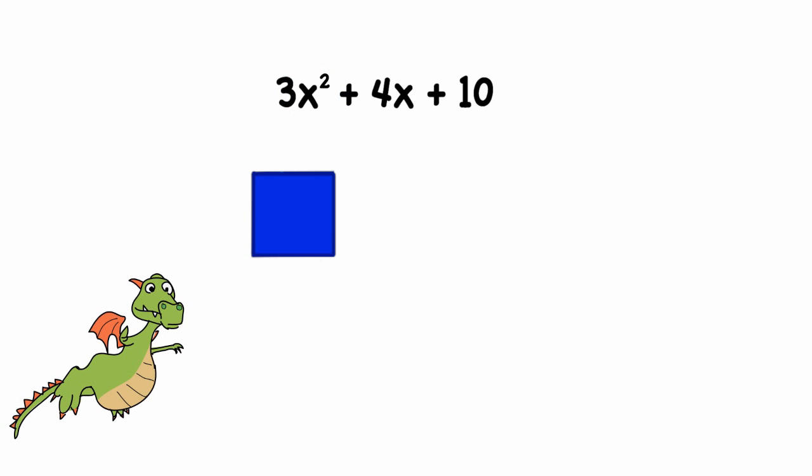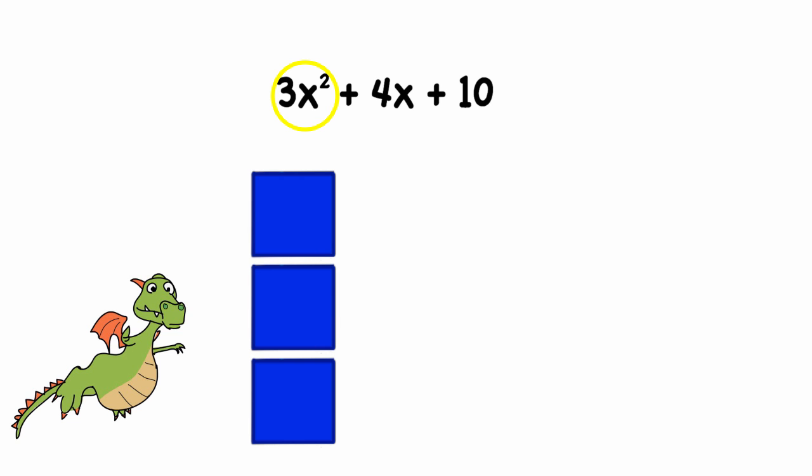Our expression didn't have just 1x². It had 3x². To represent this term, we want to have 3 times as much area. So let's have 3 of these squares.